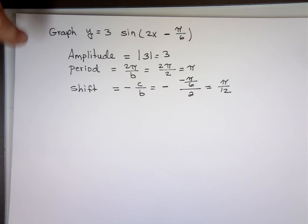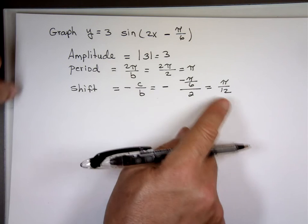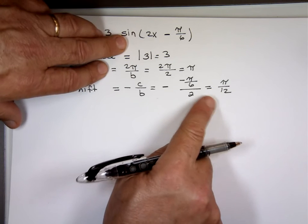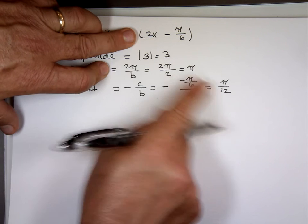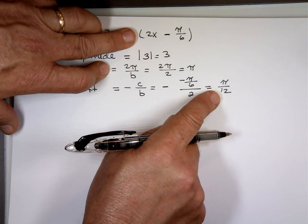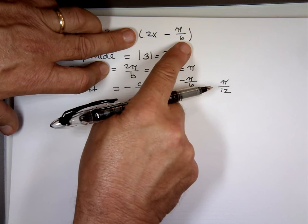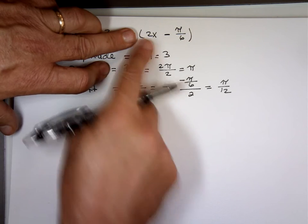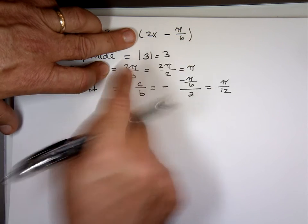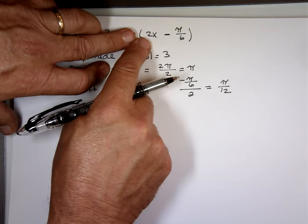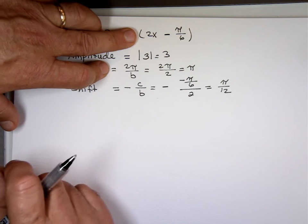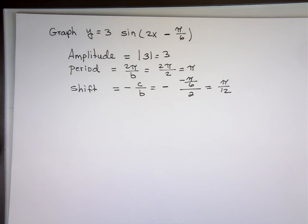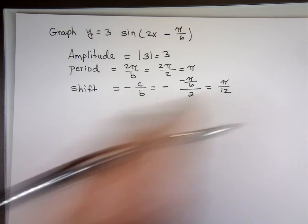Notice — you asked why when the C term is negative, the shift is positive. If I put π over 12 in for x, what's 2 times π over 12? That's π over 6. And π over 6 minus π over 6 is zero. So when the expression inside is negative, you want a positive x value to make it zero. When it's positive inside, you want a negative x value to make it zero. That's why plus gives minus and minus gives plus.